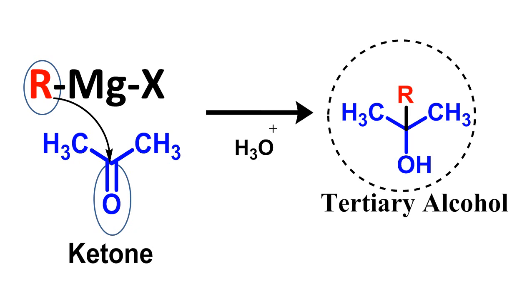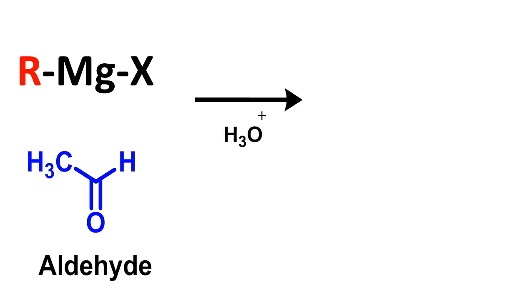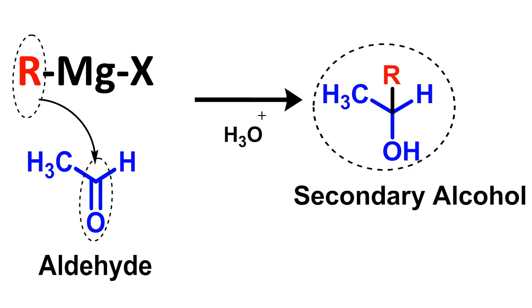We have already seen that ketones give tertiary alcohols. Now looking at aldehydes: when the Grignard reagent attacks an aldehyde, you ultimately end up getting a secondary alcohol.